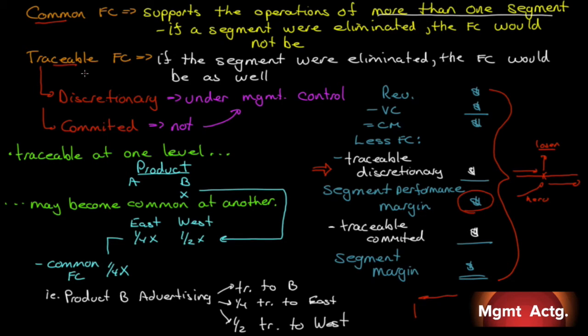And let's talk about our traceable fixed costs again. I've already mentioned this when we looked at the exhibit from the textbook. A traceable fixed cost at one level, for instance, product A and B. There may be a traceable fixed cost that if product B disappeared, this entire cost would disappear. It's a traceable fixed cost. Traceable at one level may become common at another level. So, when we break B down into sales of East and West, whatever the cost here was, we might find that half of that cost can be traced directly to West.